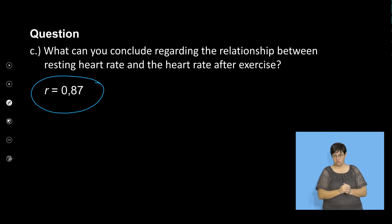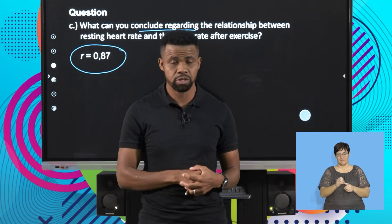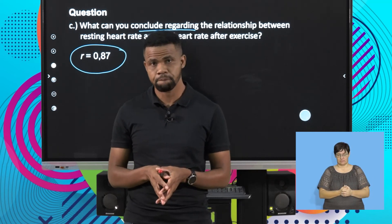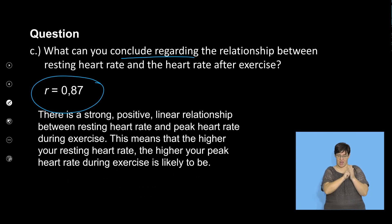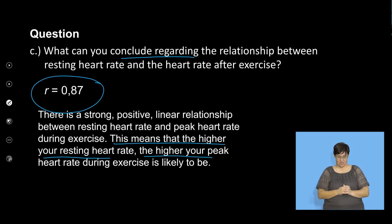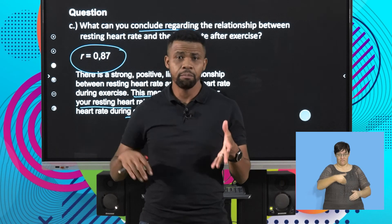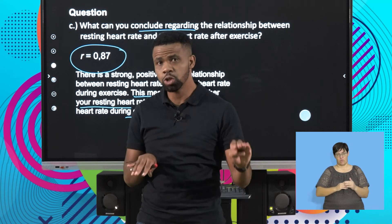So what can you conclude regarding the relationship between the resting heart rate and peak heart rate after exercise? There's a strong relationship, a strong positive correlation. There is a strong positive linear relationship between the resting heart rate and peak heart rate during exercise. This means that the higher your resting heart rate, the higher your peak heart rate during exercise is likely to be. The more fit you are and the more you exercise continuously, the lower your resting heart rate relative to your peak heart rate.